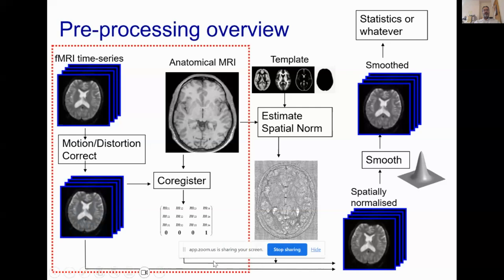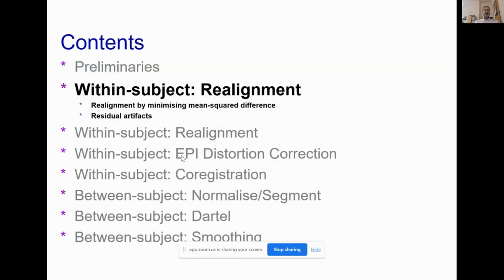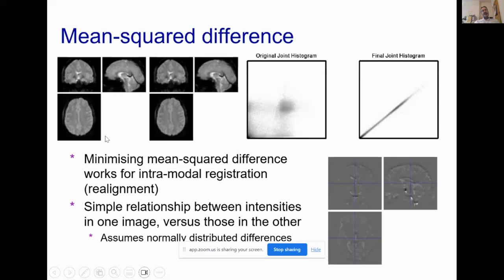The first part of within-subject processing is realignment for motion correction. Starting with a series of fMRI scans, we consider one scan or the average as a reference and figure out how to move each individual fMRI volume to best match it. We estimate a set of six rigid body parameters for each volume in order to minimize the mean squares difference among the images.